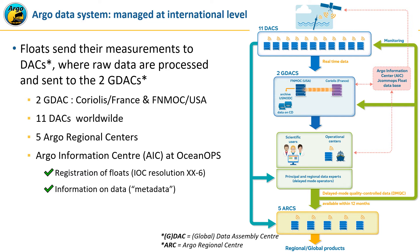The Argo data system is managed at the international level: floats send measurements to the DAC where raw data are processed, and then the DAC sends data to two GDACs — one located at Coriolis in France and one at the Fleet Numerical Center in the US. Having two GDACs ensures that all data are always available to everybody, as it has happened in the past 20 years that both GDACs were down at the same time. Another important element is the Argo Information Center managed by OceanOPS, which allows registration of the float prior to deployment in order to comply with IOC Resolution 26, and also manages metadata on profiles and monitors the fleet at sea.